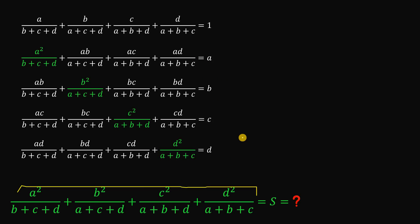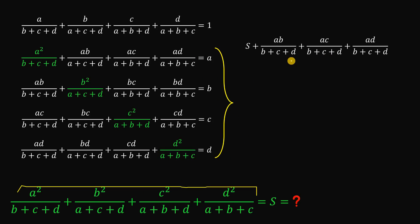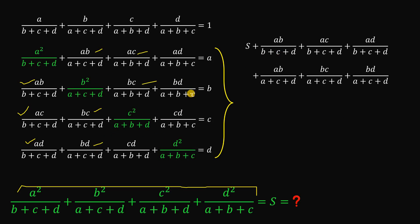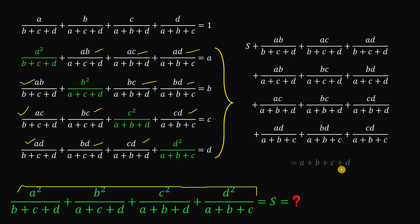Since we want the sum, we add all of these equations. When we add them, we get S equals: combining all fractions with the same denominator, we have ab over (b+c+d), ac over (b+c+d), ad over (b+c+d), and so on for the other groups. These combine as a(b+c+d) over (b+c+d), and similarly for the others, giving us terms equivalent to (a+b+c+d).